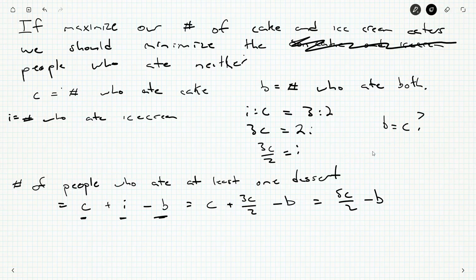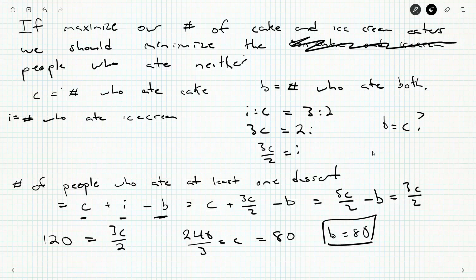And if we can, what's that going to do for us? Well, that bumps this back down to 3C over 2. And if I want to make B as big as possible, now I just need to make C as big as possible. And the biggest that could possibly be would be if all 120 people had ice cream in this case. But if 120 people was 3C over 2, if all 120 people had at least one dessert, this would make 240 over 3C, and that would be 80. And that would make B 80.